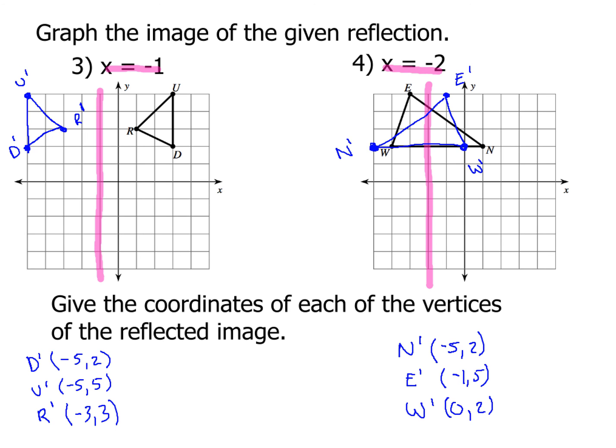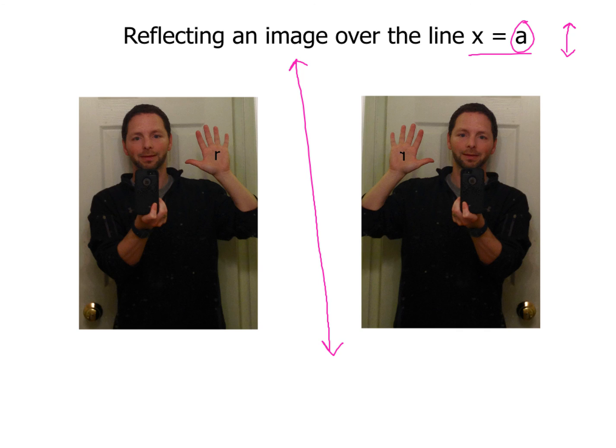So how did you do? Hopefully you came up with the correct images as well as the correct coordinates for examples three and four. So that's it for watching this example one, two, three, and four on reflecting images over the line X equals A over a vertical line. Thanks for watching. You guys have a great day. And I will catch up with you again soon. Peace out.